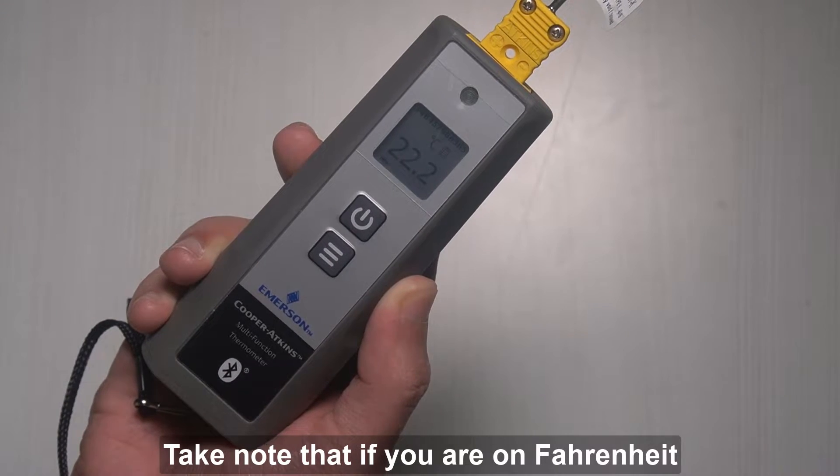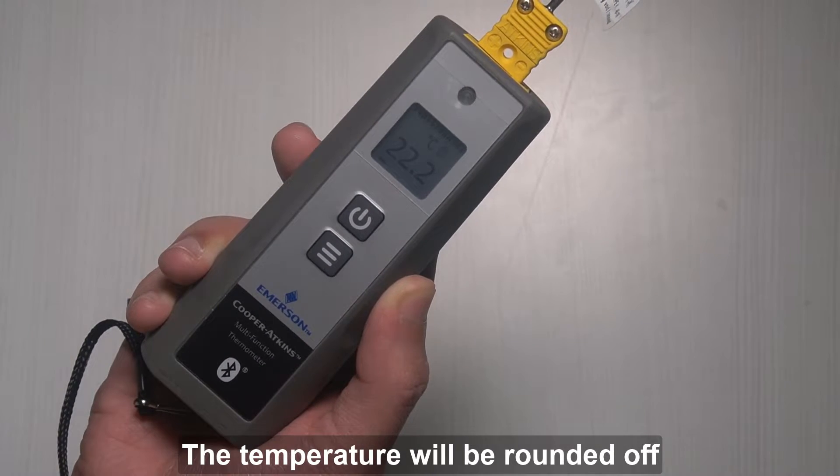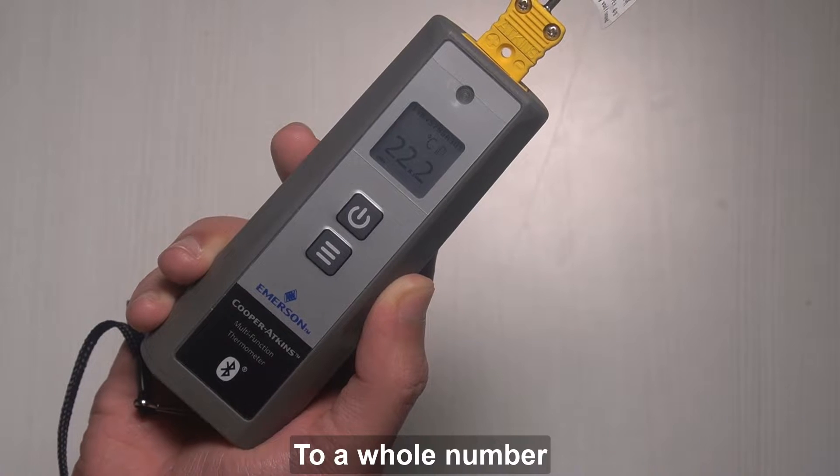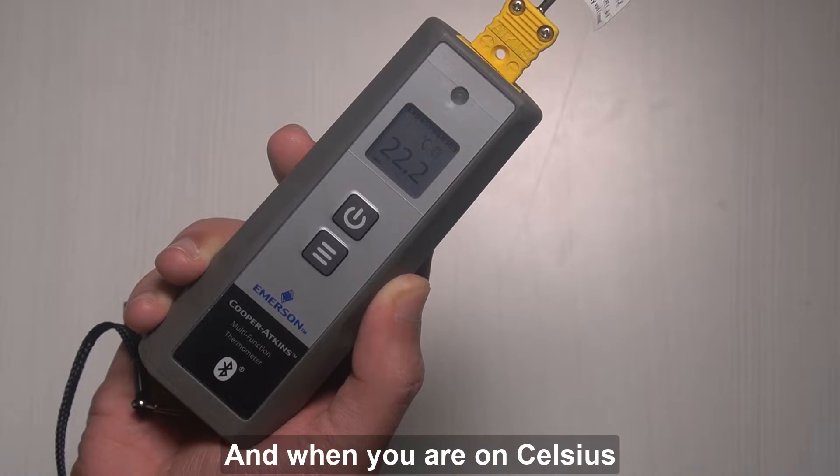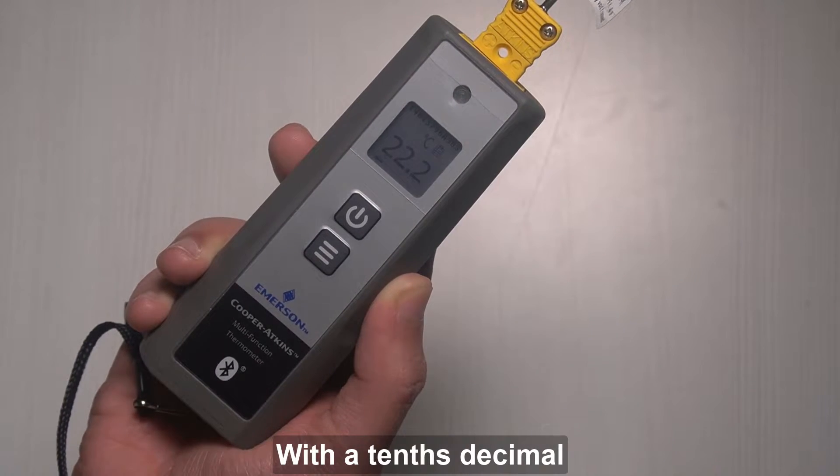Take note that if you are on Fahrenheit, the temperature will be rounded off to a whole number. And when you are on Celsius, the value will be rounded off with a tenths decimal.